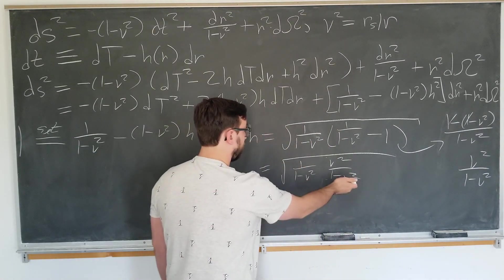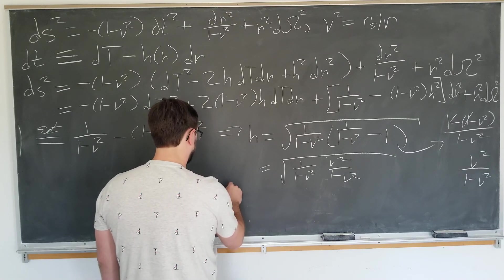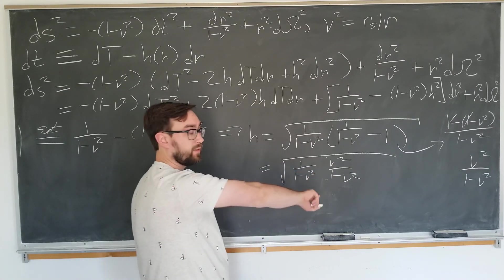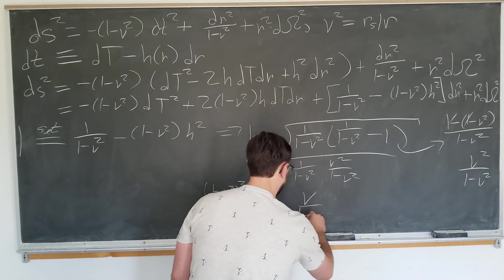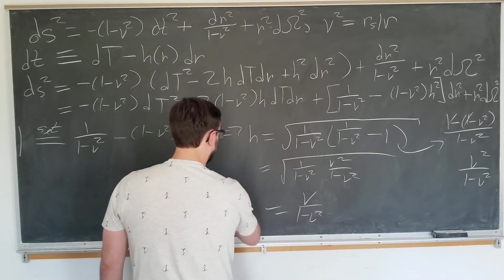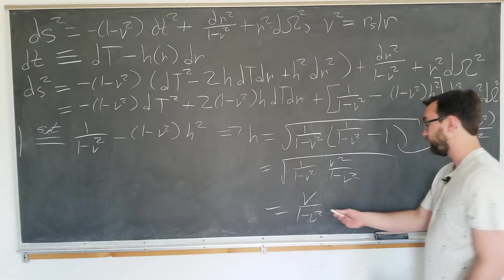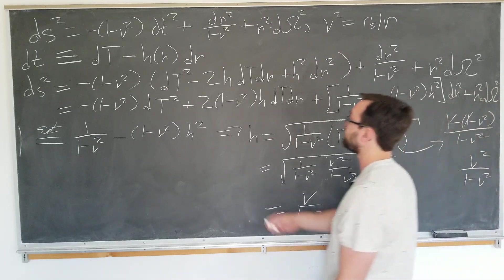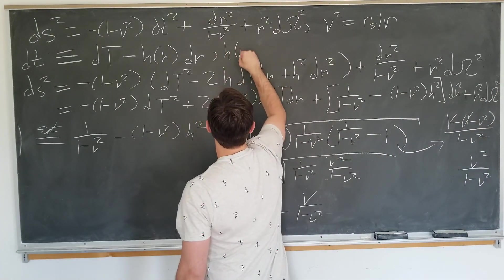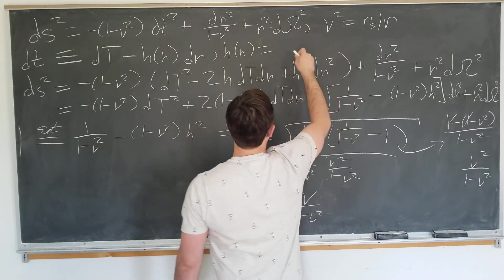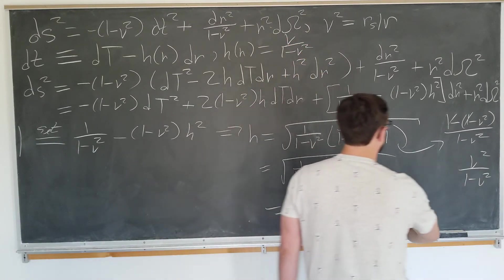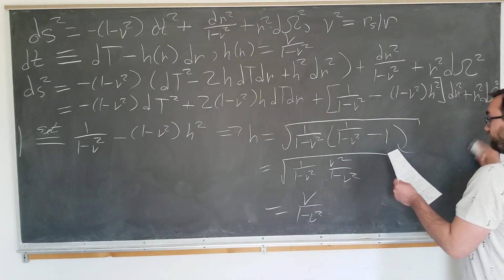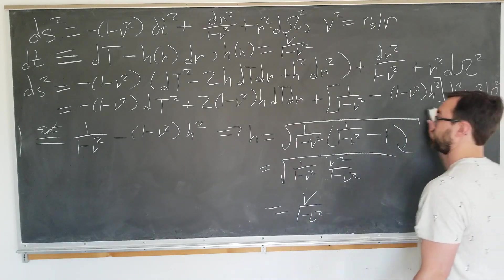We know that these combine to be 1 minus v squared squared, and we have a square thing on top. So the square root goes away. It just becomes v over 1 minus v squared. This is actually going to be our specific value for h: v over 1 minus v squared, which is pretty cool.